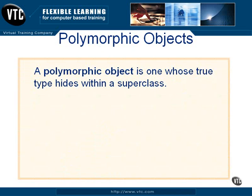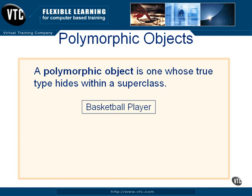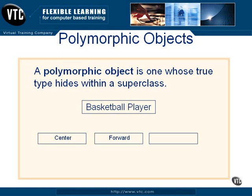A polymorphic object is one whose true type hides within a superclass. As an example, think of the class basketball player. This class has different subtypes: center, forward, and guard. Each of those subtypes has its own idiosyncrasies — position, rules, strategies for play.